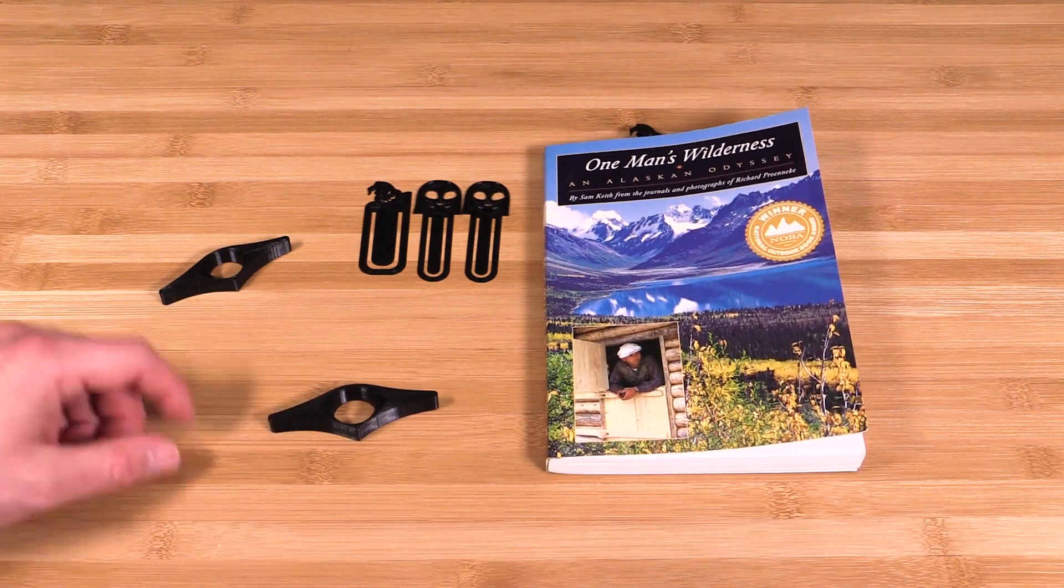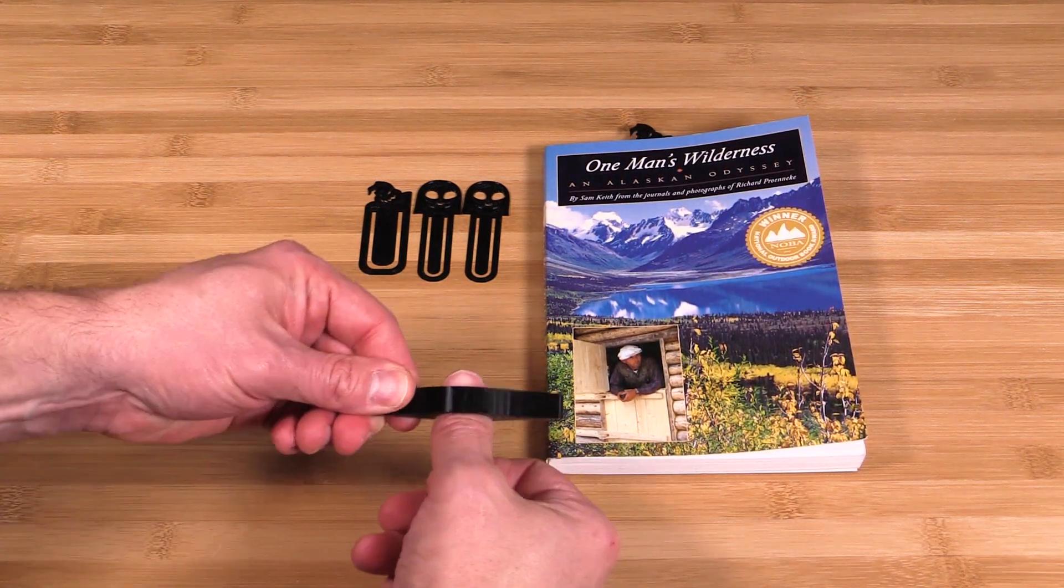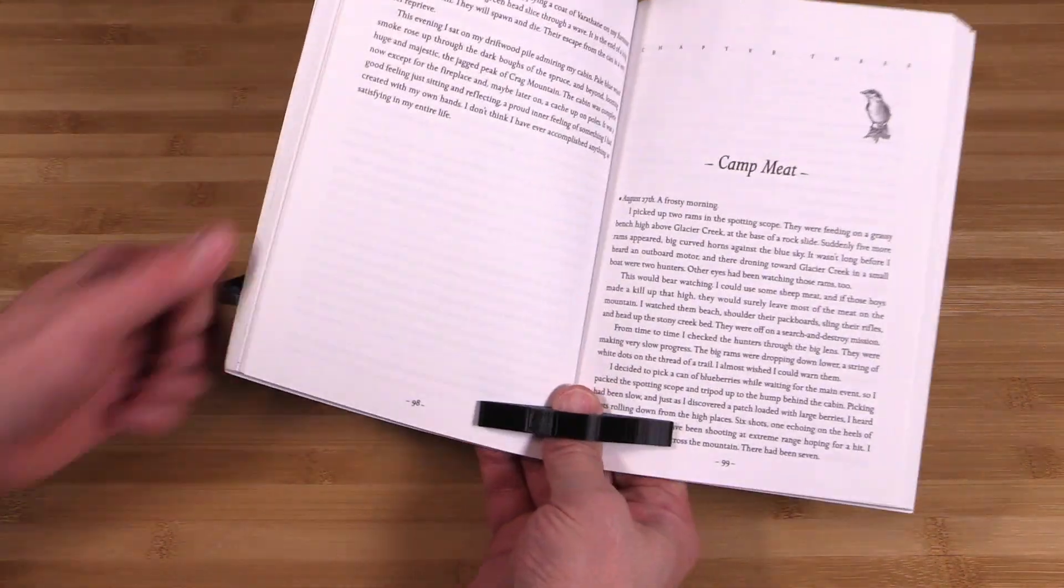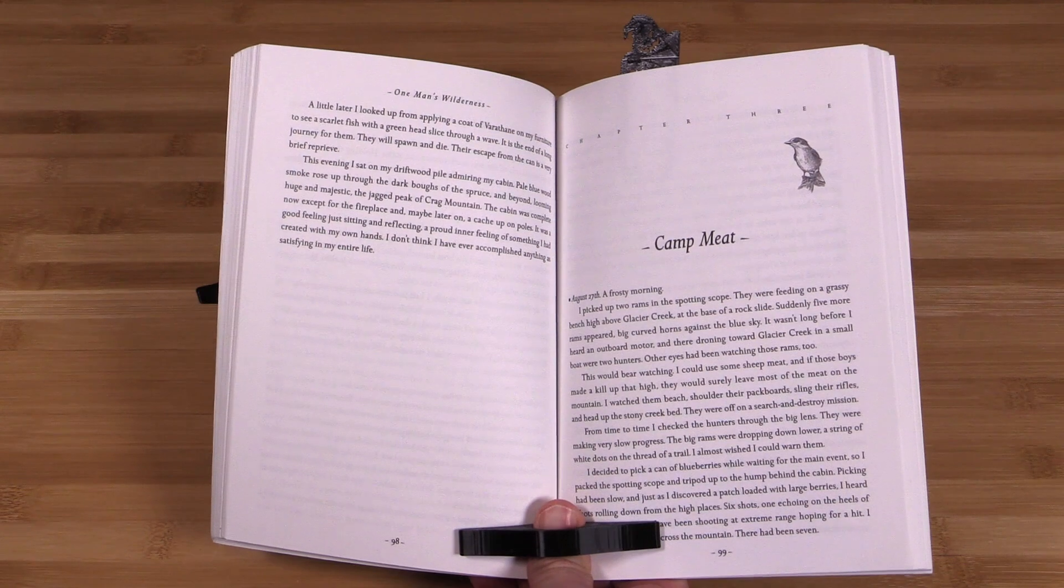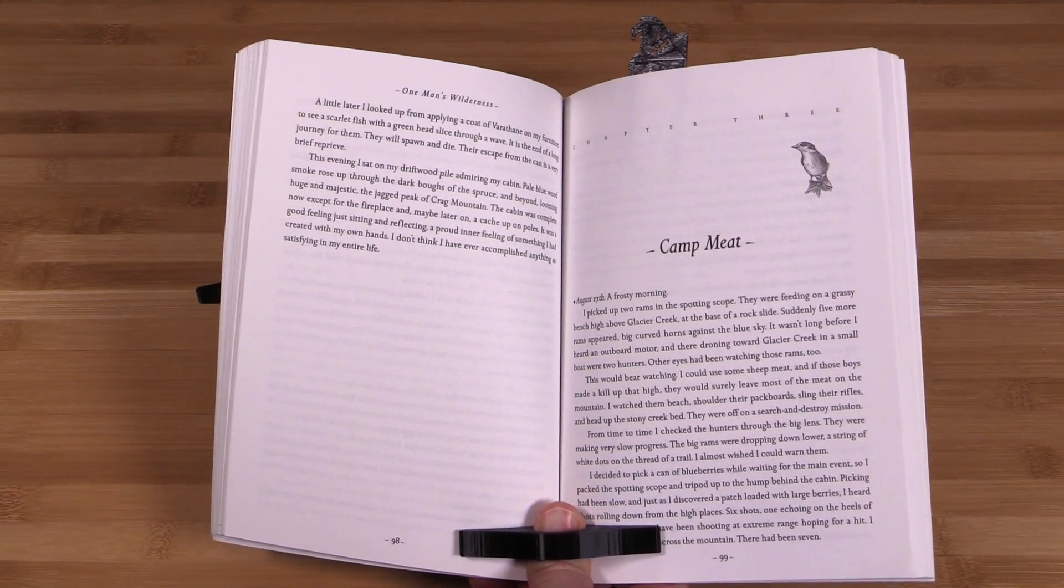And another great one are these little things here. These are actual page readers. So kind of stick them on your thumb like that, open up to a page. And while you're reading, you can just hold the book like that. It keeps the pages nice and wide for you so it makes it easy to read.